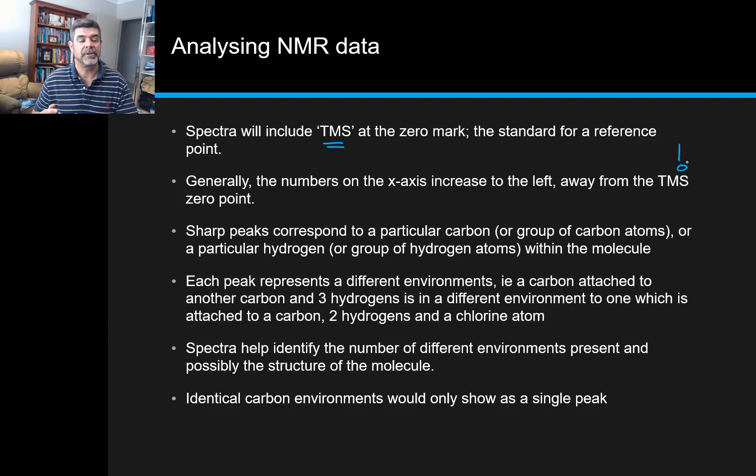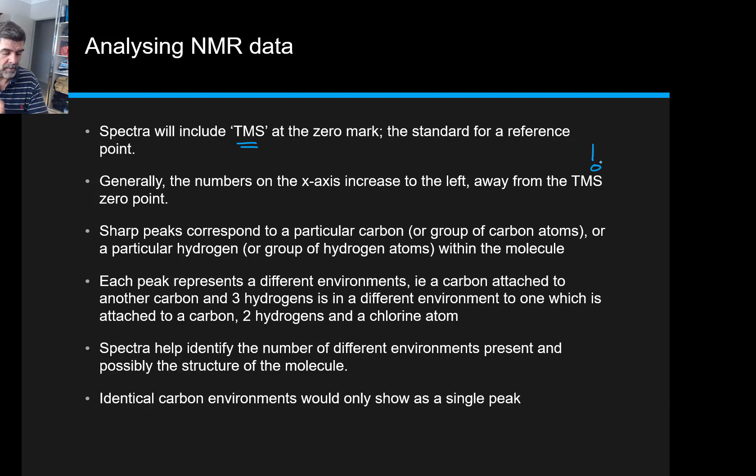Spectra also help to identify some aspects of the structure of the molecule. They may not always be definitive, and we may need to use NMR in partnership with other data in order to make exact conclusions, but at least we can get some general ideas. If all of the carbon environments in a particular molecule were identical, then we may simply have a single peak. So don't forget the peaks are just telling us about a different type of environment, and if that environment occurs several times in the molecule, it'll still only show us that one peak.